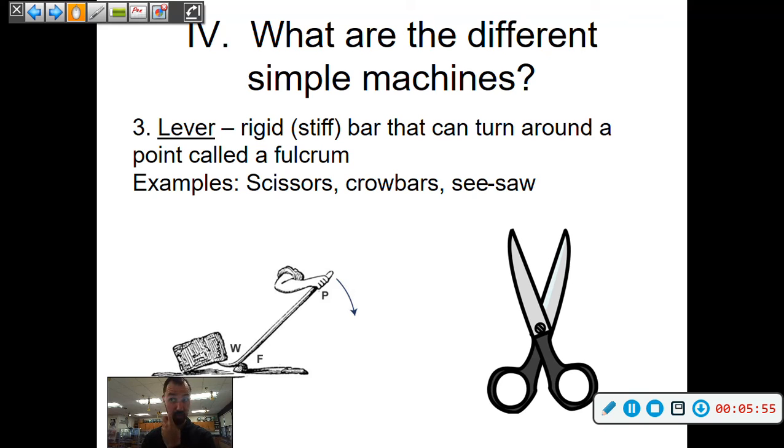Crowbars, as you see with this in the claw of the hammer also. Seesaw. So one side goes up, the other side goes down. That's an example of a lever.